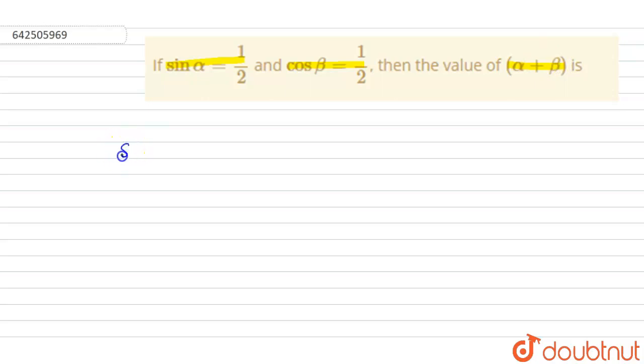We have been given that sin alpha is equal to half. Now, we know for which angle of sin do we have its value as half. We know that sin of alpha will be equal to sin of 30 degrees. Why? Because sin of 30 degrees is nothing but half. Therefore, alpha is equal to 30 degrees.